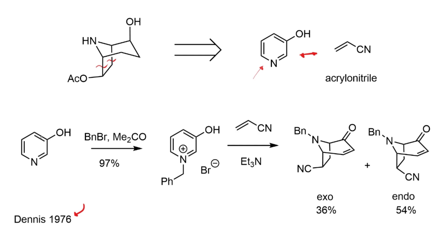The first step is simply to alkylate the pyridine with benzoyl bromide, and that proceeds in very good yield to afford the quaternary salt. Then the next step is where it gets interesting.